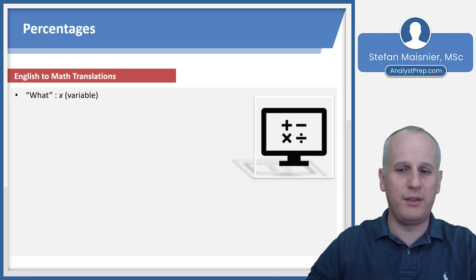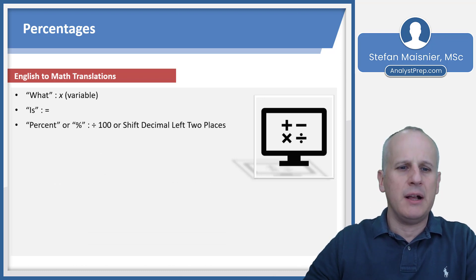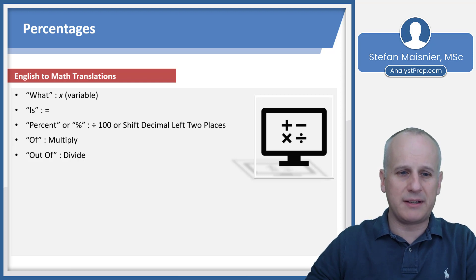Of course the word 'what' is our unknown, so we represent that mathematically with a variable, usually x. The word 'is' or any form of the English verb 'to be' - so was, will be, is - equals the equal sign. 'Percent' or the percent symbol is going to be to divide by 100 or shift the decimal left two places. The word 'of' means to multiply, and this is one of the most commonly mistaken pieces. You can think about it this way: if I have four of x, that means four times x.